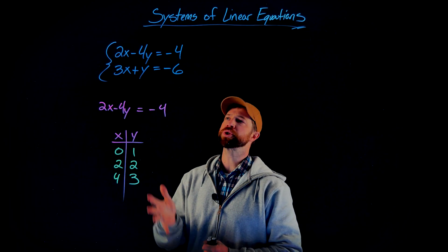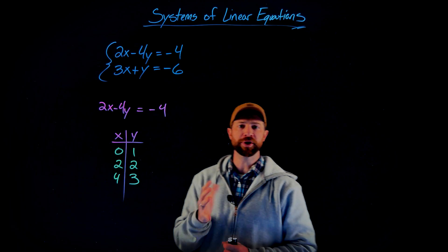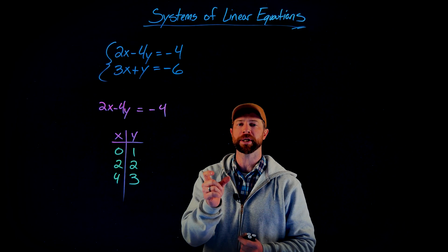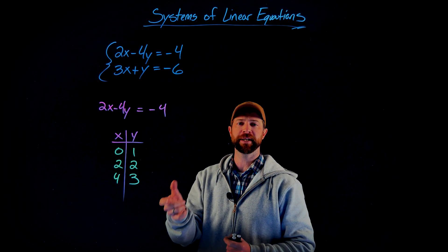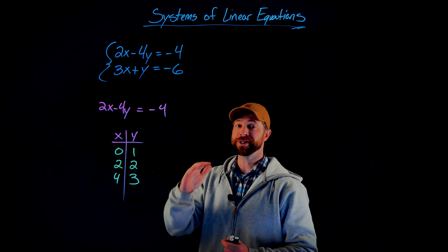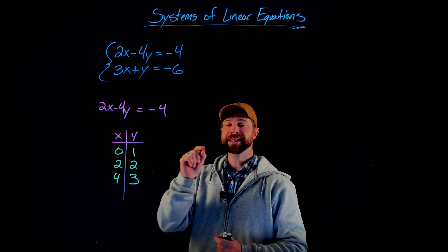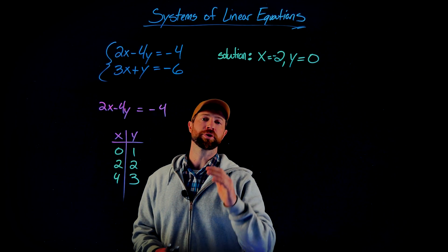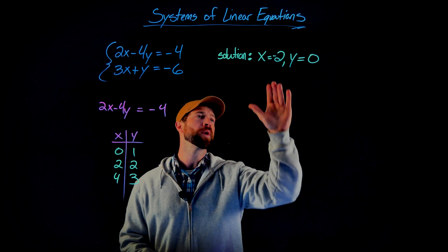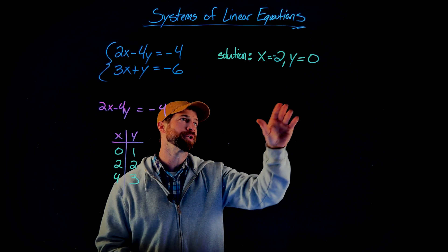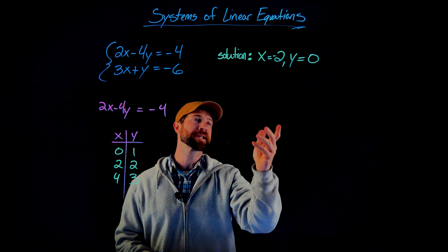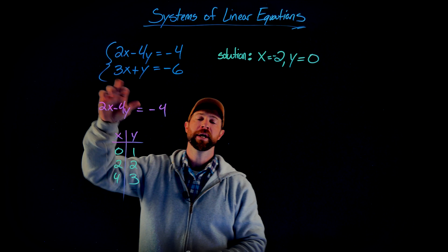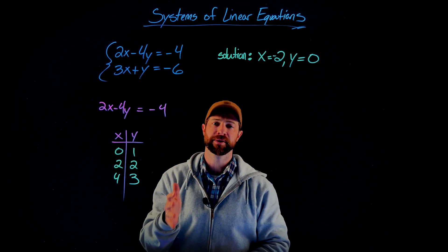So what then is a solution to the system of linear equations? Well, the solution to the system of linear equations is the solution that satisfies both of the equations. Both of these equations have infinite solutions, but they have one solution in common. For this system, the solution is x equals negative 2 and y equals 0. This is the only pairing of x and y that works in both the first equation and the second equation.